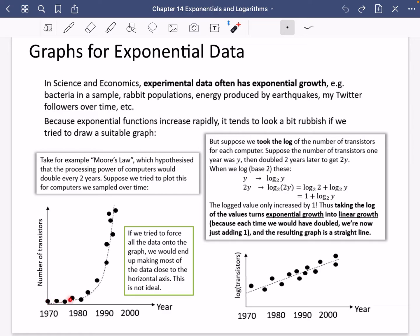Thus taking the log of the values turns exponential growth into linear growth, because each time we would have doubled, we're now just adding 1, and the resulting graph is a straight line. So in this previous one, each time we're moving across a dot on this curve, in theory it's meant to be doubling. This time, each time we move across, it's just going up by 1 each time. So it takes this exponential curve and it flattens it into a linear graph.